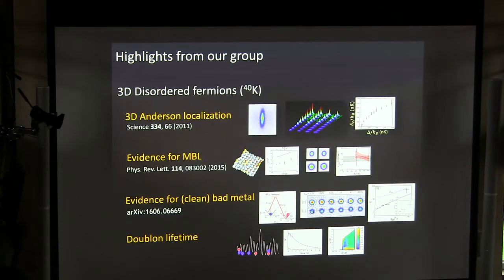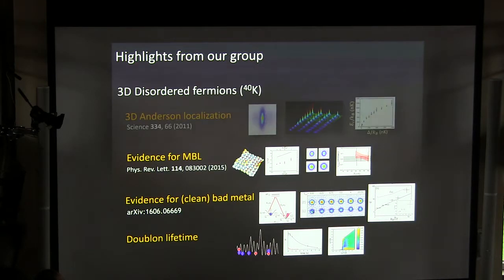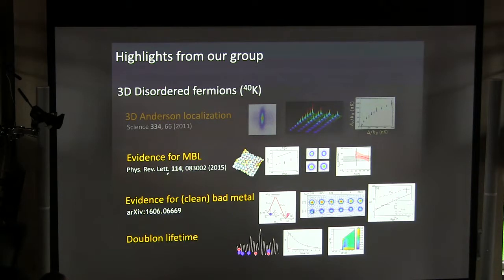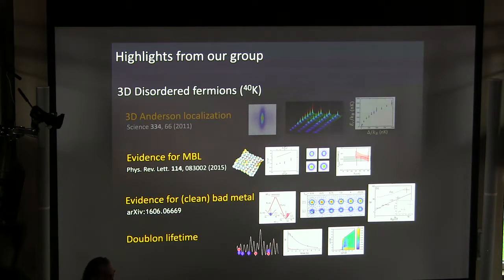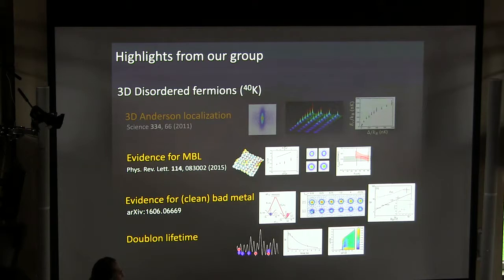Today's about fermions, so I'll talk about experiments using potassium-40 atoms. Again, this is all in 3D with cubic lattices. And what I'm going to do is concentrate on showing you a thread where we saw first evidence for a metal-insulator transition, then evidence for a bad metal in a clean system, although it spills in a piece of information. And I'll end with recent results on doubleon lifetimes and talk about what is maybe a natural interpretation in terms of a phase diagram sampling.